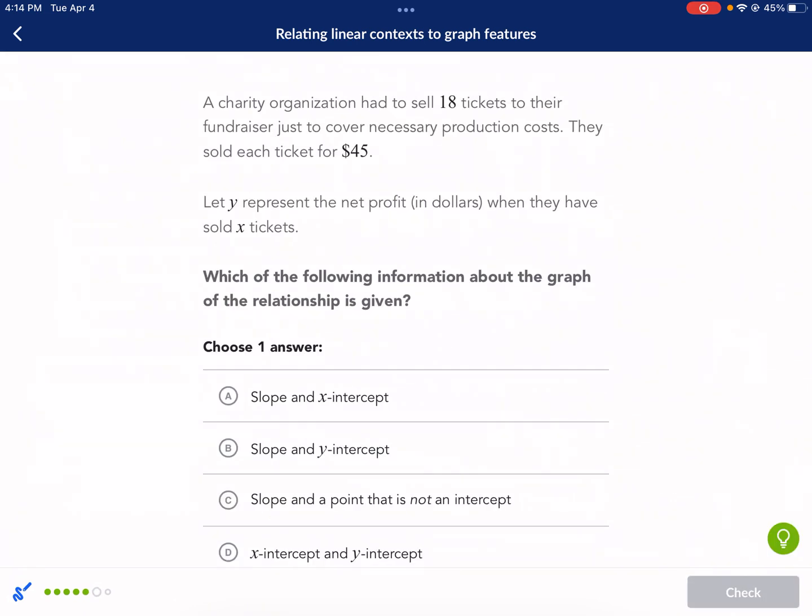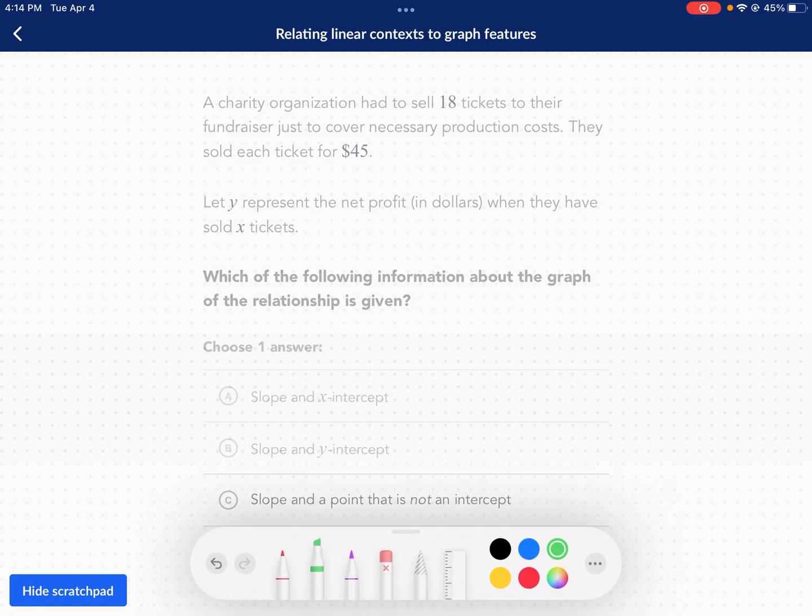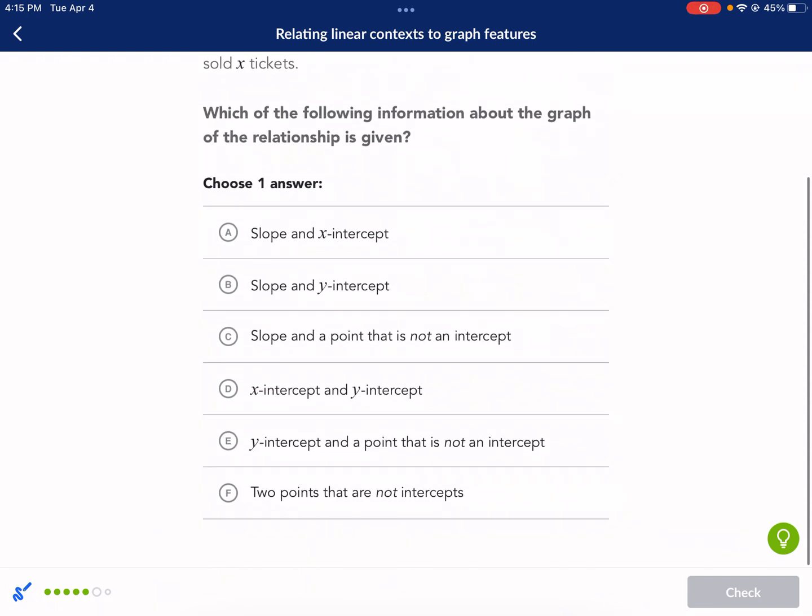A charity organization has sold 18 tickets to their fundraiser to cover necessary production costs. They sold each ticket for $45. Okay. This is actually good information. This tells us our slope. So they actually gave us our slope this time. This is slope. And they said they had to sell 18 tickets to fundraise just to cover the necessary costs. So this is our X-intercept. So Y is the cost. Let's see. Y is net profit. And then they have sold X tickets. So they said they had to sell 18 tickets to cover their production costs. That means they got to $0 profit. And that means we started on negative. We got here. We kind of had this scenario earlier. And that is going to be an X-intercept. And then this is the slope. So we're given the X-intercept and the slope.